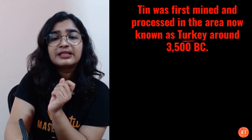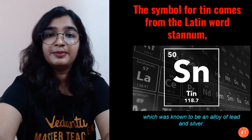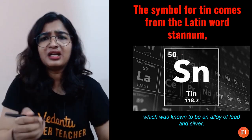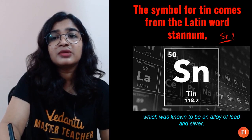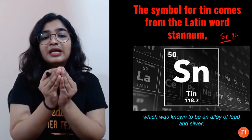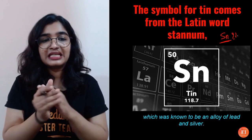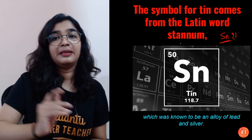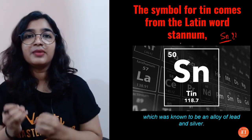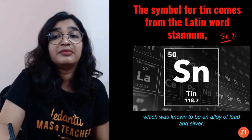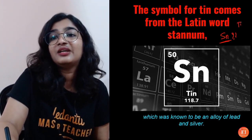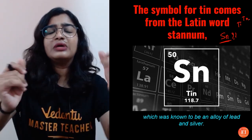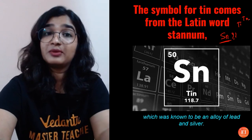Tin was first mined and processed in the area of Turkey around 3500 BC. You might wonder why we use the atomic symbol Sn. As with other elements, it has been derived from its Latin name — 'stannum' is the Latin name for tin. So the atomic symbol is Sn, not Ti or Tn. It was once mistakenly known as an alloy of lead and silver, but that is not correct.